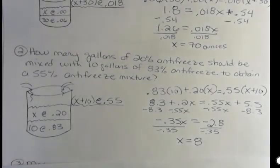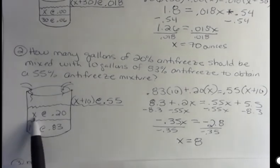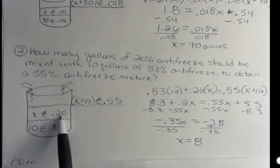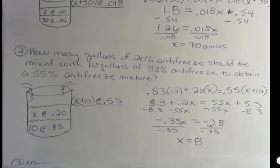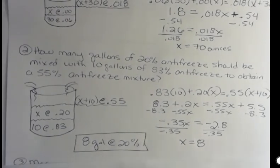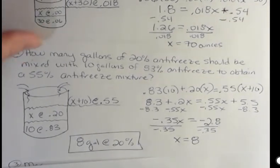So what is that telling me? That tells me x is 8. Or in other words, I need to add x, 8 gallons of 20% to make that to a 55% solution. So I want to add 8 gallons at 20%. That's the question. How many gallons should we add at 20%? And it's going to be 8 gallons. So there's two different mixture problems for you.